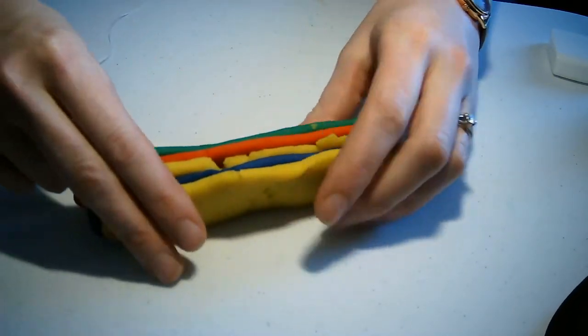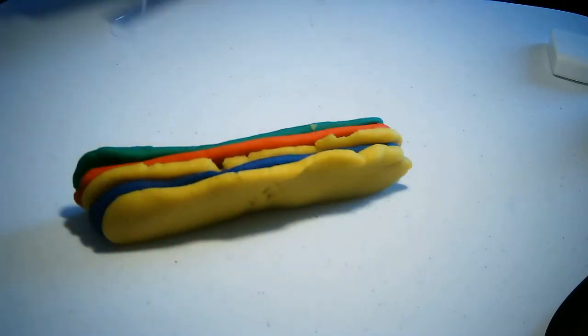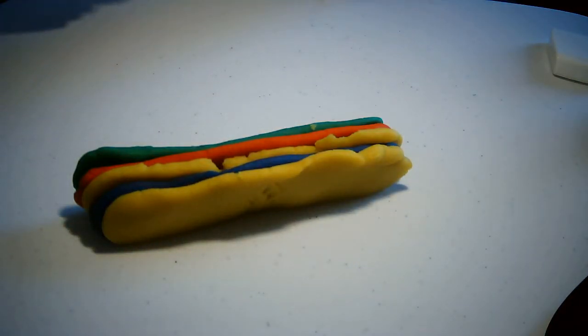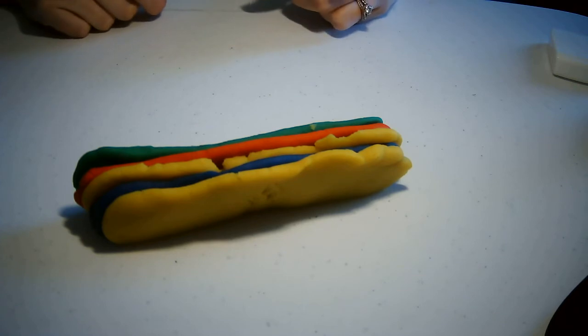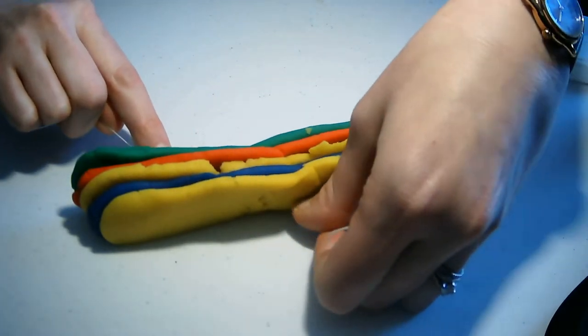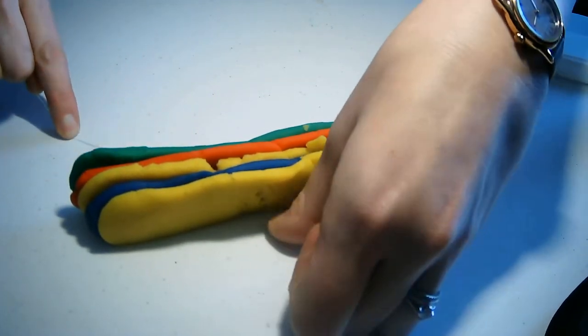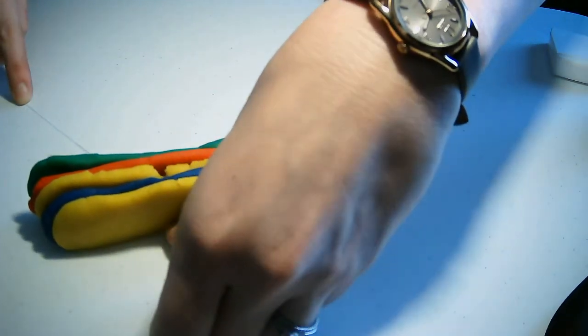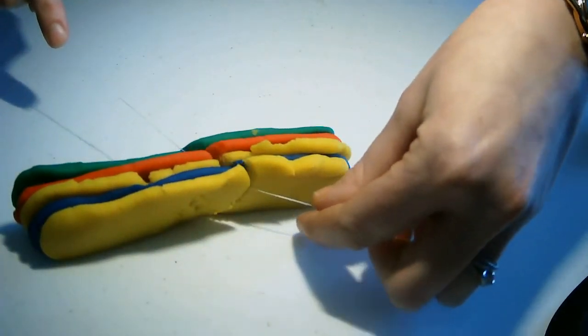I'm going to squish it together a little just so it doesn't fall over as I'm doing this. What I'm going to do is take a piece of dental floss and slice through these rock layers. Hopefully I can get a clean cut. This is supposed to be about 45 degrees. If it's not perfect, that's okay.